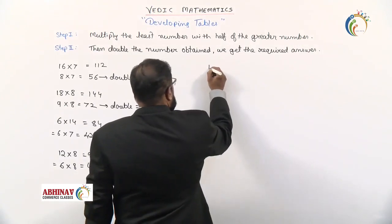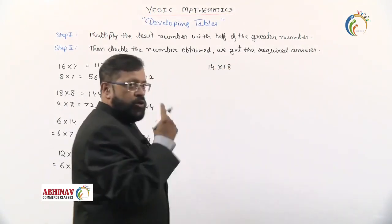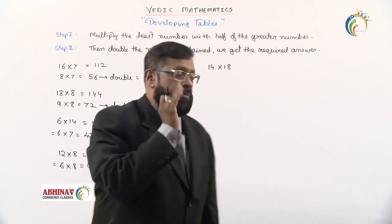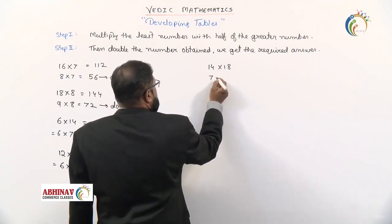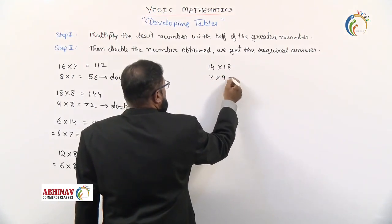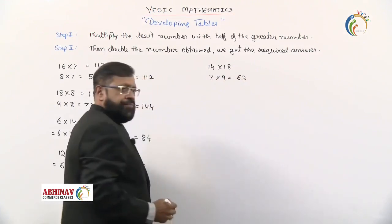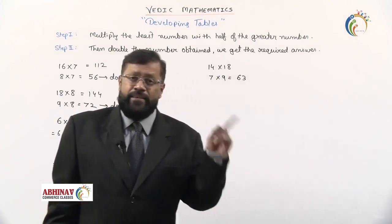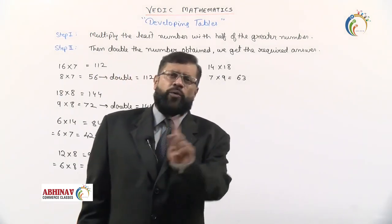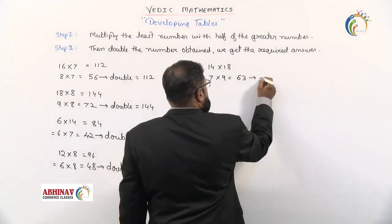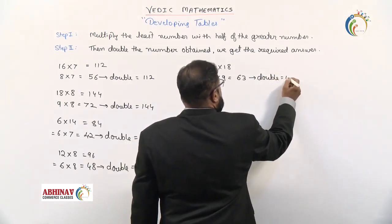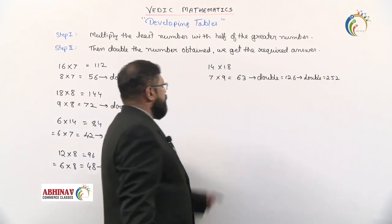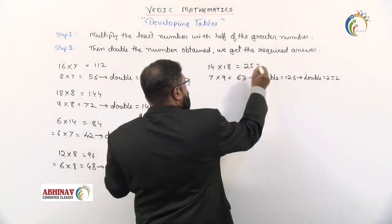Say for example the number is 14 into 18. Both are two digit numbers. We'll halve it. H-A-L-V, halve means we'll divide into two equal parts. So 14 divided by 2, what we get is 7. 18 divided by 2, what we get is 9. 7 into 9 is 63. If it is a single digit number, we double it once and we get the answer. When we have two digit numbers, double it not once, twice. That is 63, we first double it, what we get is 126. This 126 also we double it, what we get is 252. So 14 into 18 when you multiply, what answer we get is 252. So simple.